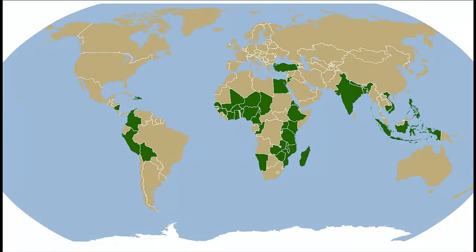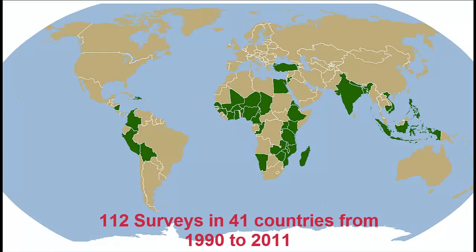Therefore, we decided that it would be useful to identify some of the key reproductive and sexual health characteristics of this particular age group. For this report, data comes from 112 surveys conducted in 41 countries between the years of 1990 and 2011.